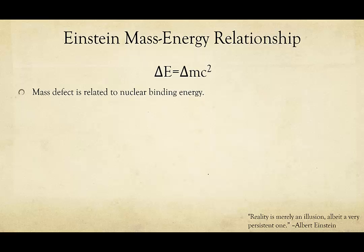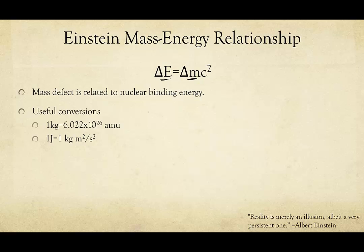This gives us the binding energy from the mass defect. Our ΔM is our mass defect. Our ΔE is our binding energy. There's going to be some useful conversions that you need to use for this section. 1 kg is equal to 6.022×10²⁶ amu. And then, it's useful to always remember that one joule is one kilogram meter squared per second squared. And I want to especially point out this kilograms, so that we're aware that we always need to convert our mass into kilograms.